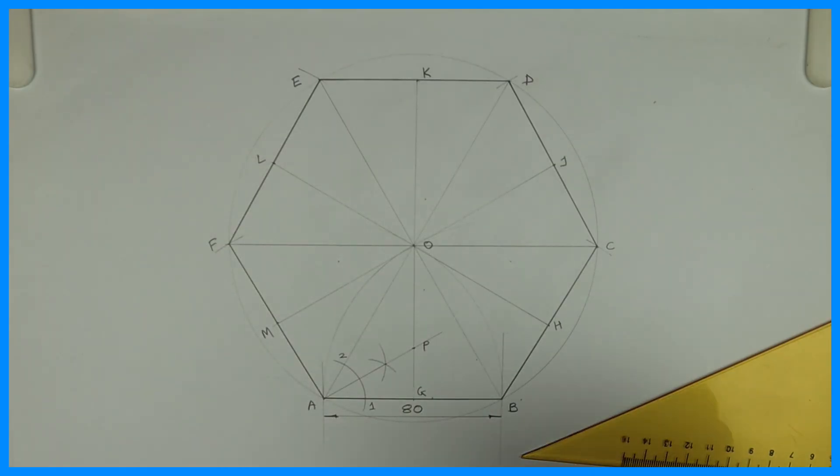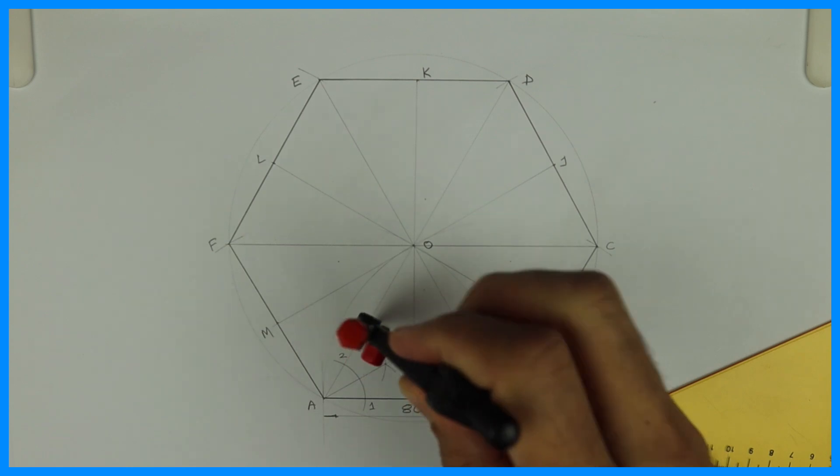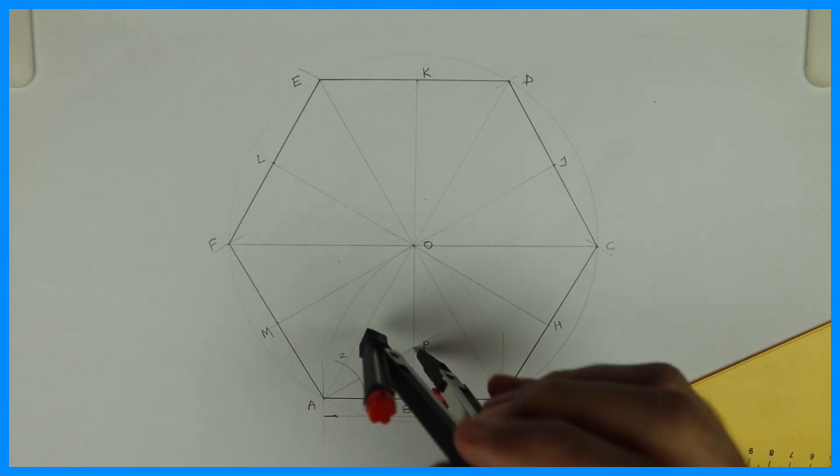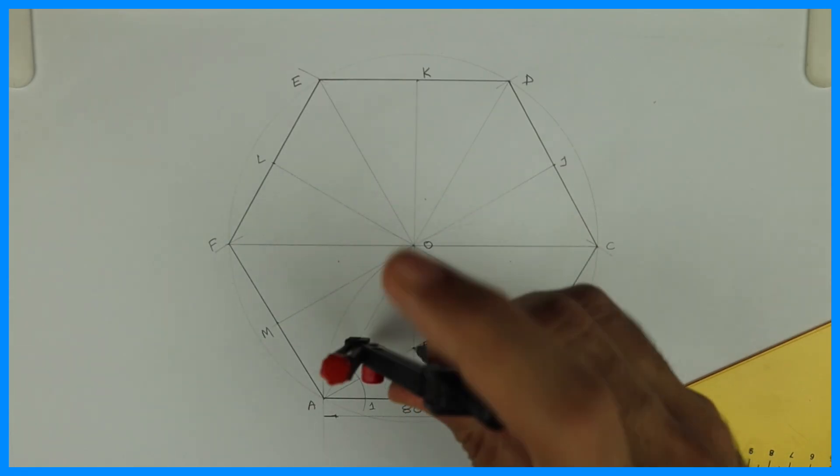Then you take P to G and draw a circle, which will touch one side AB in the triangle. See this.